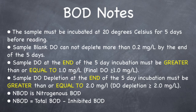Also, the sample DO depletion at the end of the 5-day incubation must be greater than or equal to 2 mg per liter — the sample must at least deplete by 2. So the final DO must be greater than or equal to 1, and the sample depletion must be greater than or equal to 2. If either of these are not met, the sample is invalid — not the entire test, just those samples. The only time the entire test is invalid is if your sample blank DO depletes by more than 0.2.